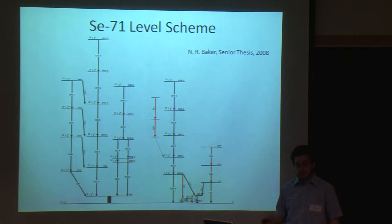In selenium-71, we have both structures. The collective bands are very prominent, but we also have a few of these irregular single particle states. And we suspected this was because selenium-71 is a transitional nucleus with a moderate degree of collectivity, but we needed to make some measurements to be sure. Specifically, we needed to measure lifetimes of the individual energy states, essentially the half-lives.